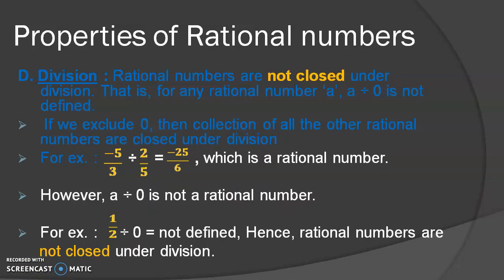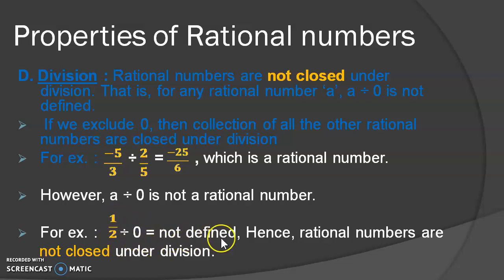Next is division. This is not the same case with division. Excluding 0, the collection of all the other rational numbers are closed under division. You can see the example on the screen. However, if A is a rational number and if it is divided by 0, then it is not defined — that means it is not possible. For example, if 1 upon 2 is divided by 0, then the answer will be not defined. Hence, the rational number is not closed under division.